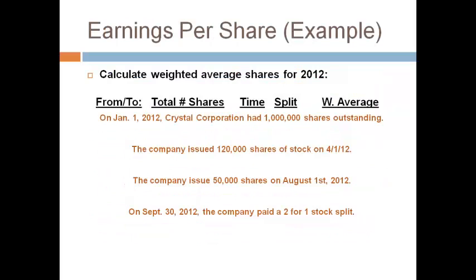The first thing that must be done is computing the weighted average. Start with the headings. You will need the date the number of shares changed, the total number of outstanding shares, the number of months the shares were outstanding, and a column for splits or stock dividends.